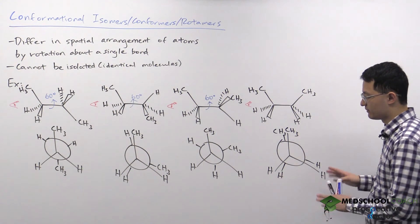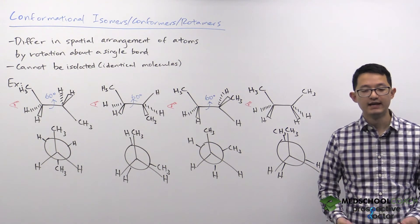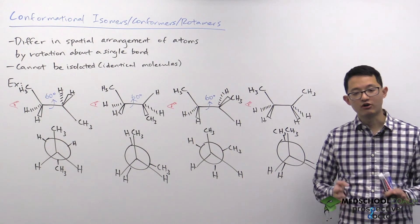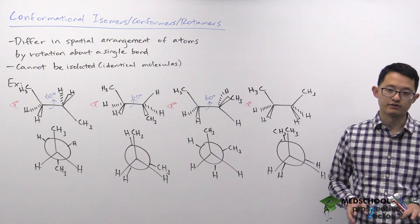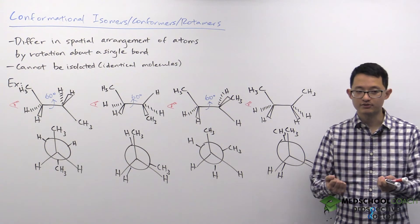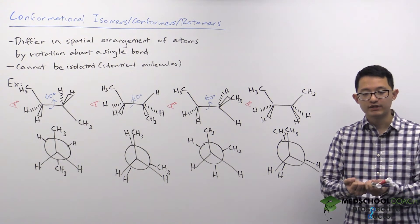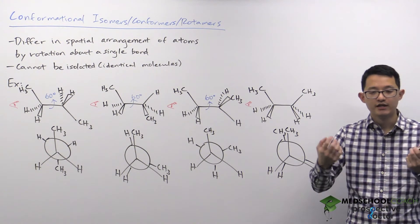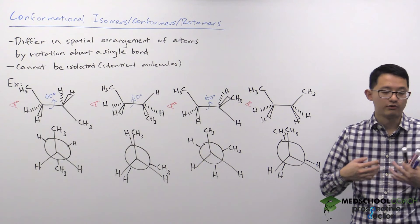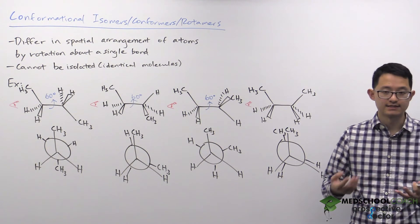These conformational isomers are not equal in energy — some are more stable and some are less stable, based on the relative orientation of substituents. The largest substituents are the most important to pay attention to because they have the largest electron clouds. When two large substituents are close to each other, their electron clouds can overlap, and since electrons are negatively charged they repel each other. This unfavorable interaction is called a steric interaction, also known as steric hindrance.